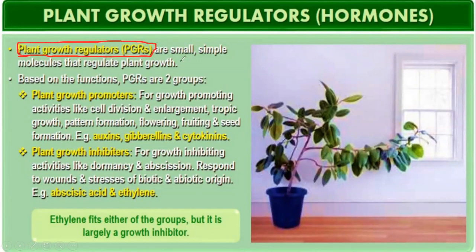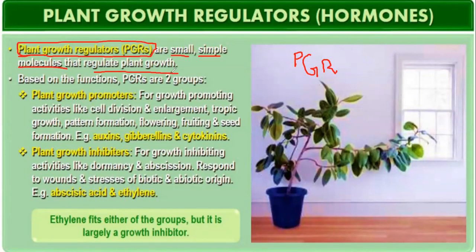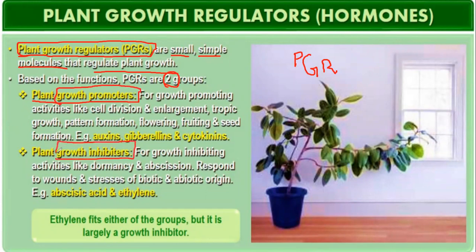Plant growth regulators, or PGR, are small and simple molecules that regulate plant growth. Based on their functions, PGRs are of two groups: plant growth promoters and plant growth inhibitors. The hormones that come under growth promoters are auxins, gibberellins, and cytokinins.